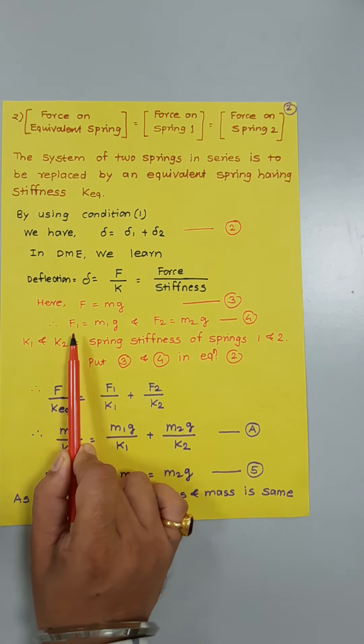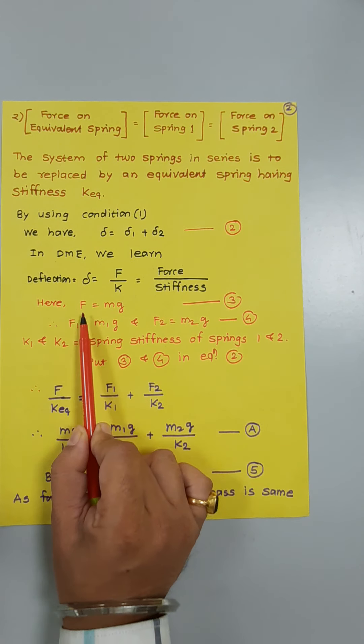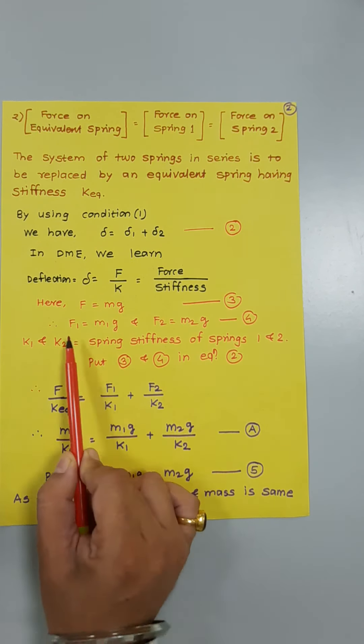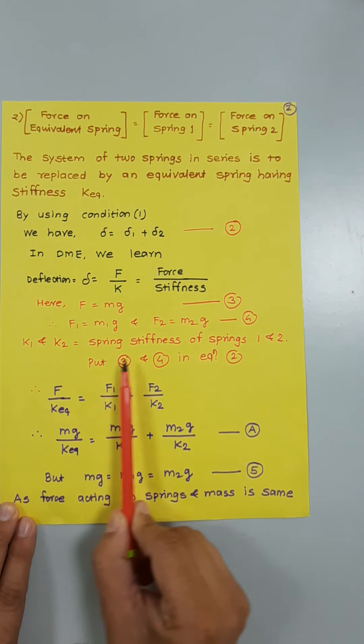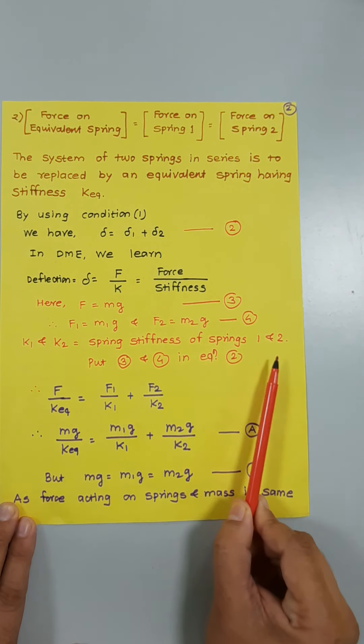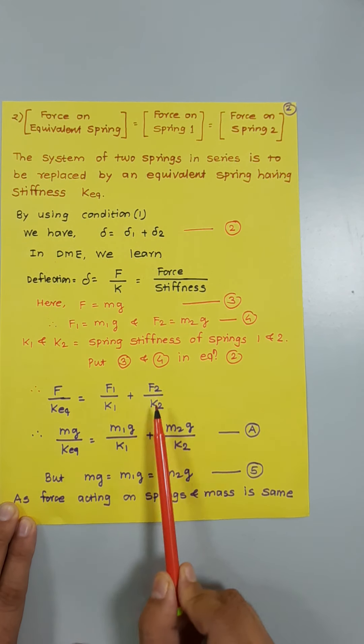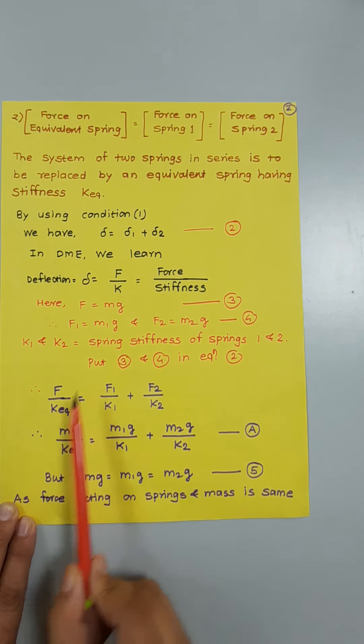F is the force in the equivalent spring, F1 is the force in spring one, and F2 is the force in spring two. So F = mg, F1 = m1g, and F2 = m2g. This is equation number four. Substituting equations three and four into equation two: F/k_equivalent = F1/k1 + F2/k2, which gives mg/k_equivalent = m1g/k1 + m2g/k2.